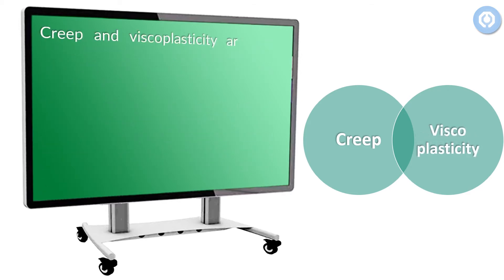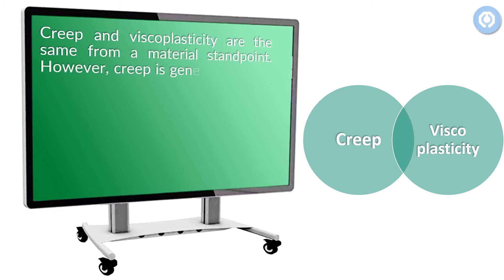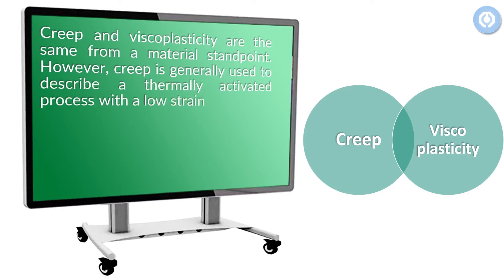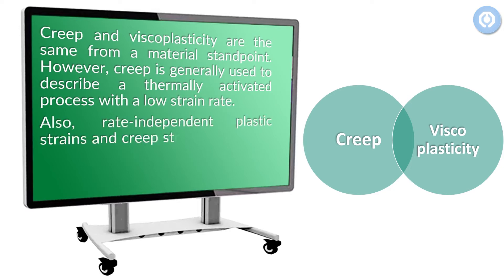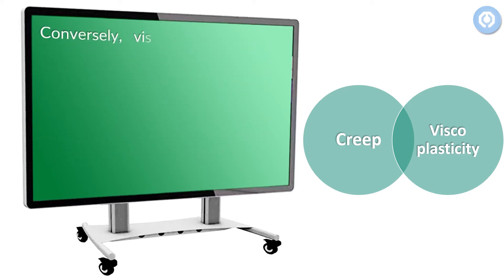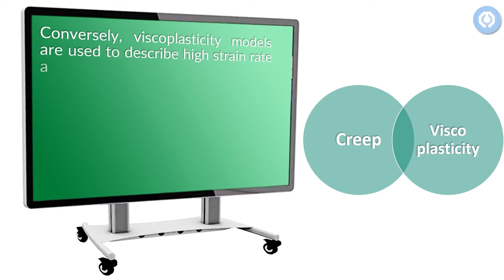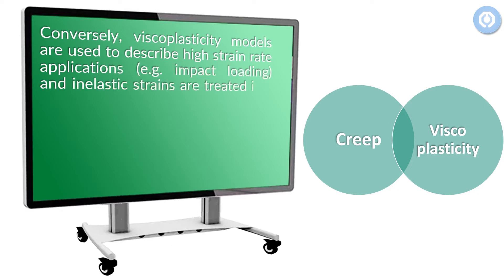Creep and viscoplasticity are the same from a material standpoint. However, creep is generally used to describe a thermally activated process with a low strain rate. Also, rate-independent plastic strains and creep strains are treated in a weakly coupled manner. Conversely, viscoplasticity models are used to describe high strain rate applications, for example impact loading, and inelastic strains are treated in a strongly coupled manner.